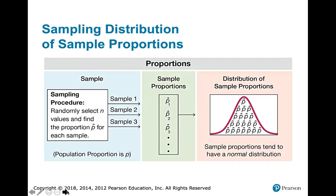Let's say you're interested in that population proportion p. One way that we can infer things about it is to create a sampling distribution of sample proportions. We go to the original population, randomly select n values — say n is 1,000 — compute p hat for those 1,000 values, put them back in, choose another 1,000, compute another p hat, and do this for all possible ways you could select 1,000 values, computing every possible sample proportion p hat.